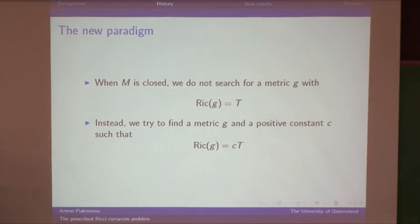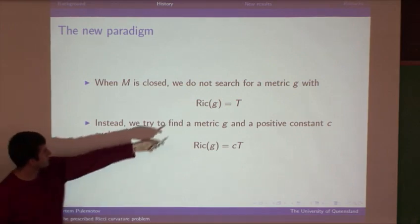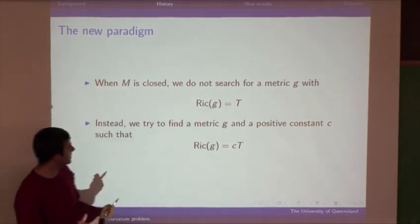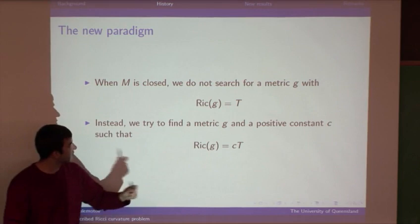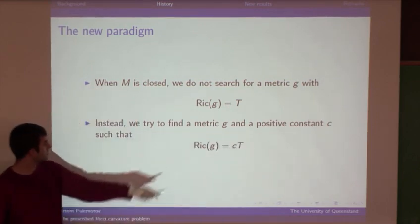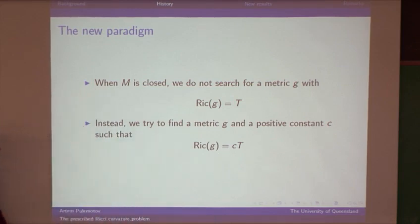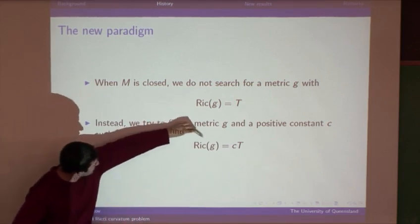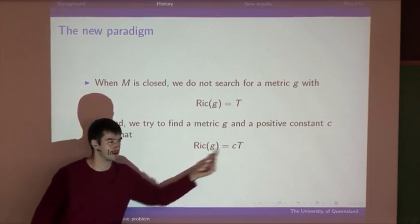This example tells us what we should expect on a more general closed manifold. When we're on a closed manifold, we no longer search for a metric with Ricci curvature T. Instead, we reformulate the prescribed Ricci curvature problem: the problem becomes finding a Riemannian metric G and a constant C such that Ricci(G) = CT. This is the prescribed Ricci curvature equation, and it essentially has two unknowns.